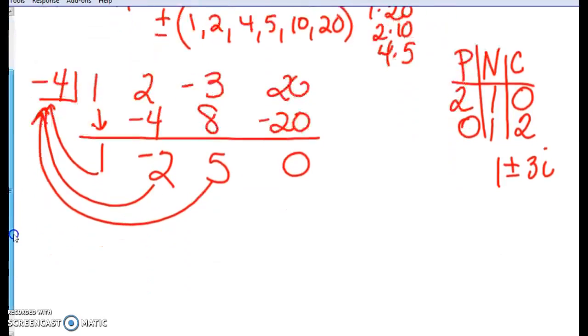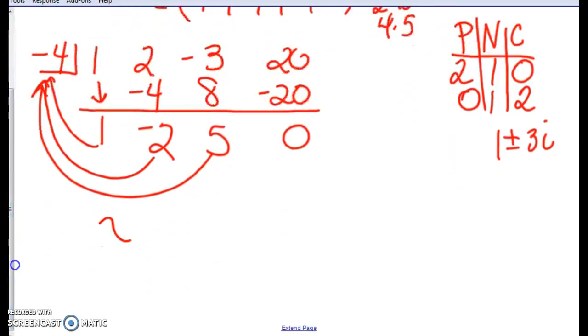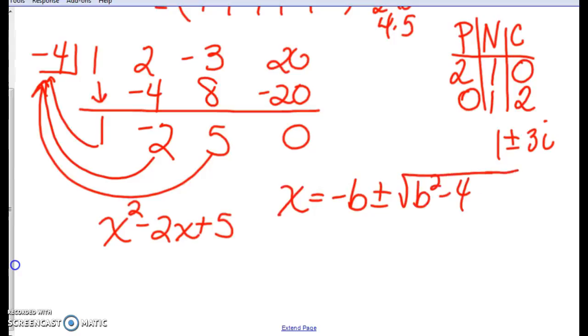Now, with what we have left, we've got an x squared minus 2x plus 5. That does not factor. If it doesn't factor, then we are going to have to use the quadratic formula. So just in case you forgot, we'll do this. A is your first coefficient, which is 1. B is going to be negative 2. C is going to be 5.